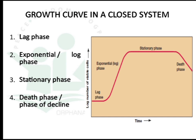The four phases are: lag phase, exponential phase, stationary phase, and death phase or decline phase. Initially, there will be no increase in microorganism number. After that, there will be maximum cell increase, then the cell number remains stationary, and finally the number of viable cells will decrease in the death phase.